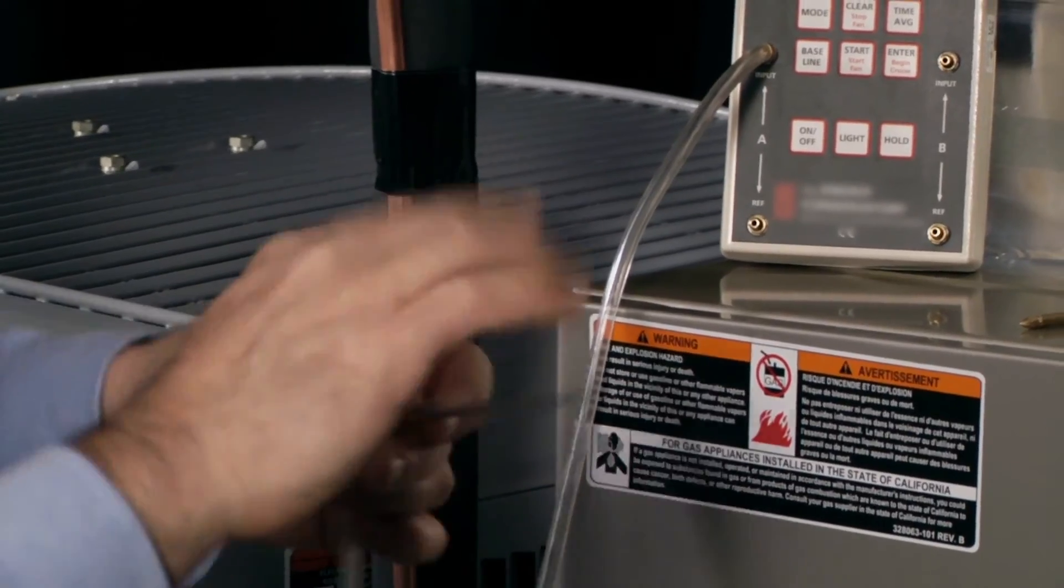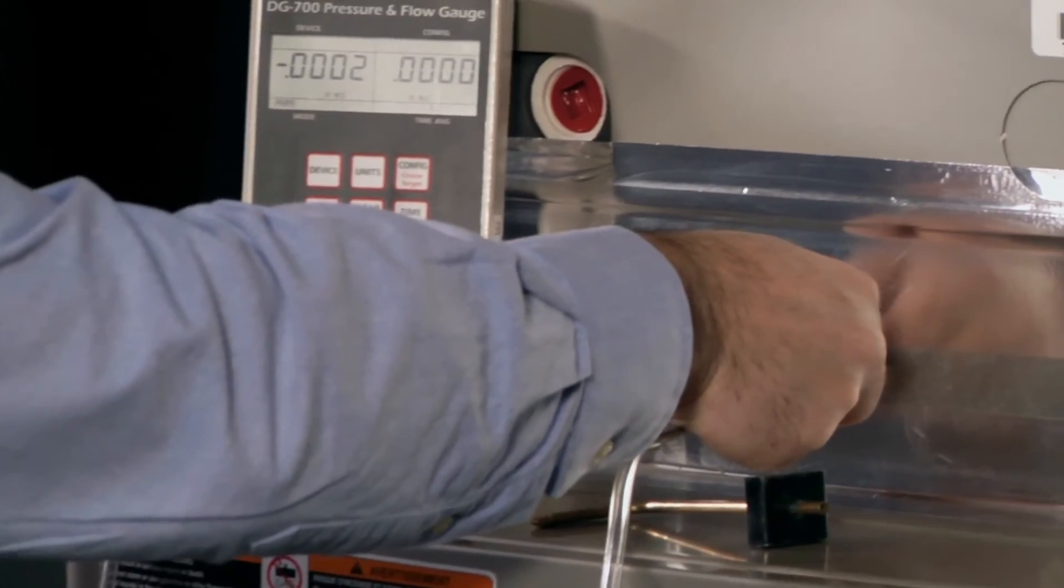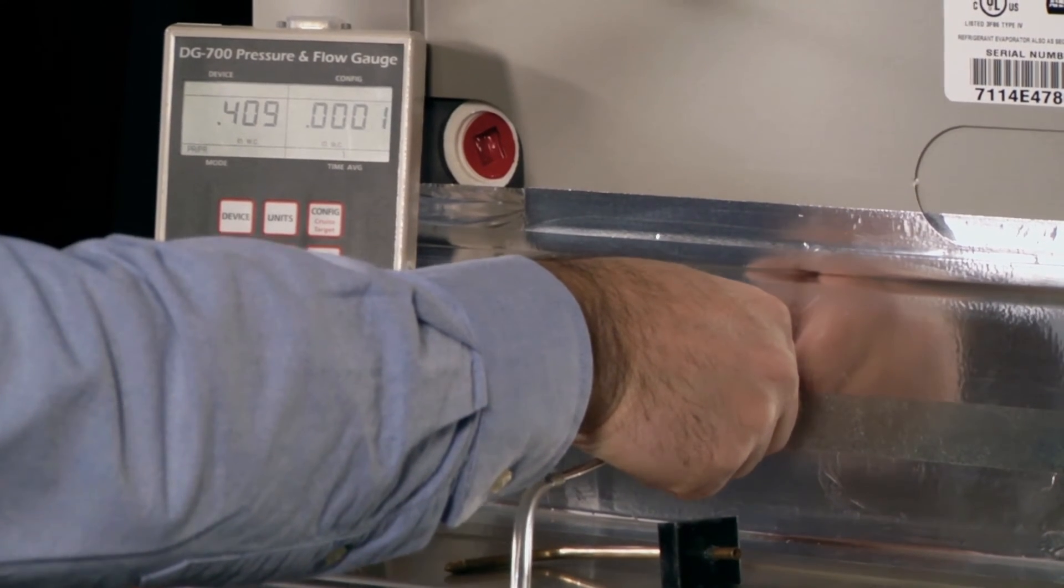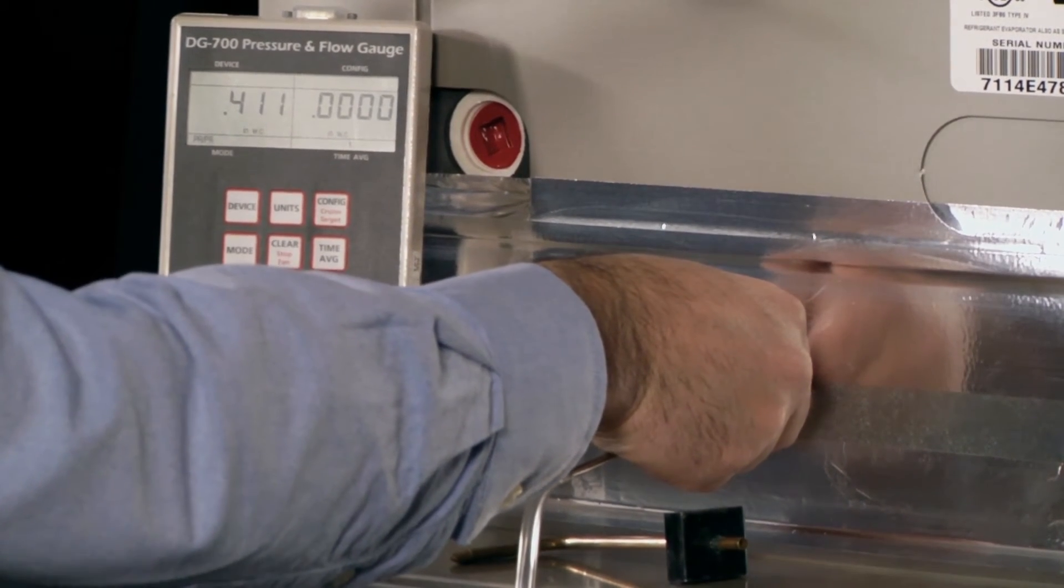Now, James is going to repeat the test using the straight static pressure probe in the same location. You can see that he gets about the same result, slightly higher than 0.4 inches water column. So you can see that whether he uses a straight or a 90 degree probe, he gets basically the same result. That's also good news.